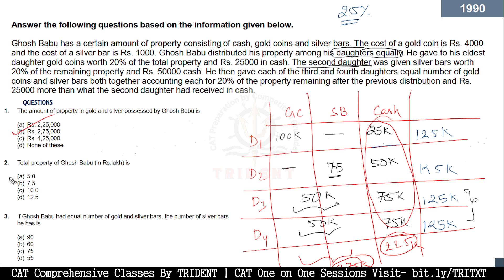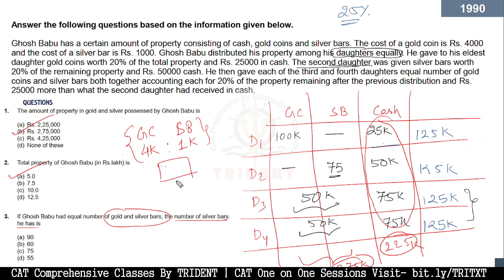The second question asks for the total property of Ghosh Babu in lakhs — that is 5 lakhs, which we calculated at the very beginning. The third question: if Ghosh Babu had equal numbers of gold coins and silver bars, what is the number of silver bars? One gold coin costs 4,000 and one silver bar costs 1,000 — a ratio of 4:1. If we treat one gold coin plus one silver bar as a single unit worth 5,000, then 275k divided by 5k equals 55. So the total number of each — both gold coins and silver bars — is 55.